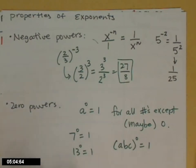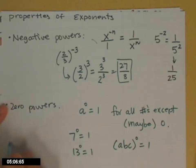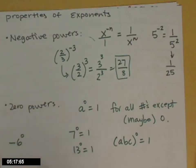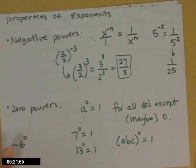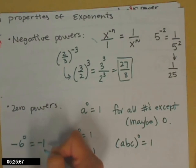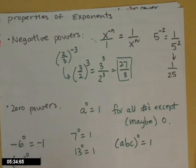The only time I want you to be careful, ready? If you have negative 6 to the 0, and I should say that differently, the 0 is only applied to the 6. It's not applied to the whole thing. So you would do the exponent first. Remember your order of operations. 6 to the 0 is 1, and then you apply the negative sign. So this is negative 1 as opposed to the whole number, negative 6, in parentheses to the 0. This is positive 1.